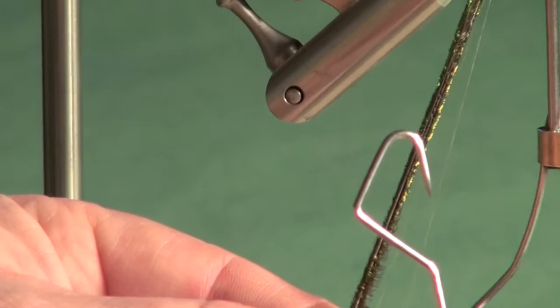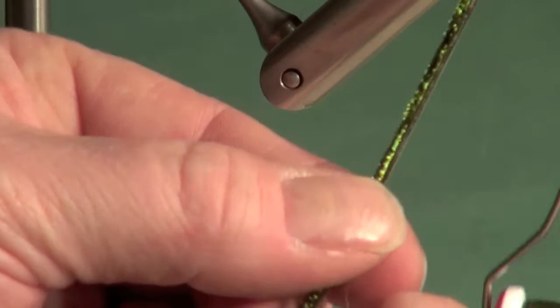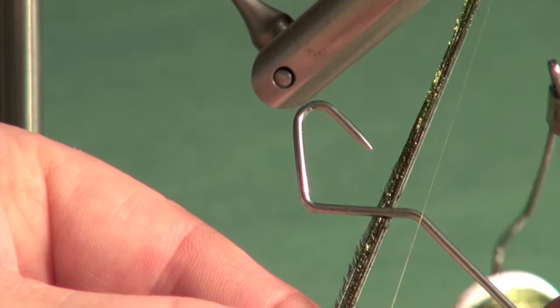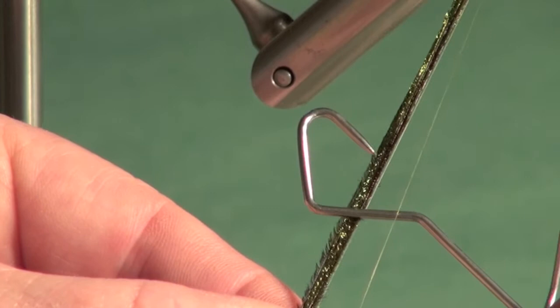All right. So there's the loop stroked together. We come up with the open end of the tool through the thread loop around. So the point of the tool goes underneath the peacock herl. And then I've got the right side of the loop on top of the tool.